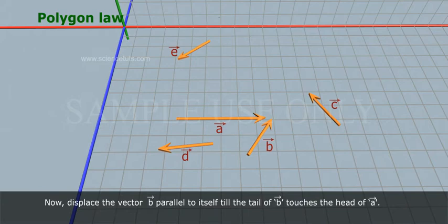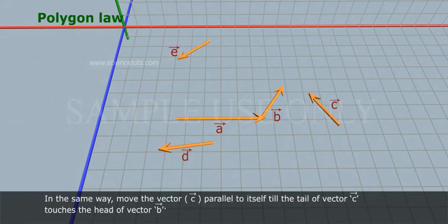Now, displace the vector B-bar parallel to itself till the tail of B-bar touches the head of A-bar. In the same way, move the vector C-bar parallel to itself till the tail of vector C touches the head of vector B.